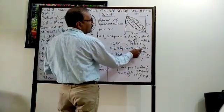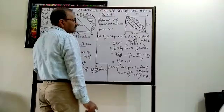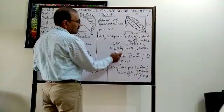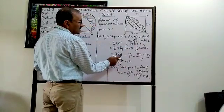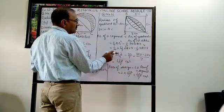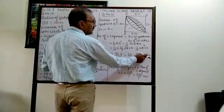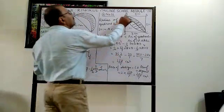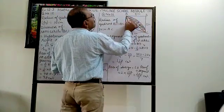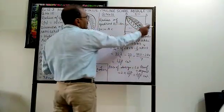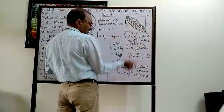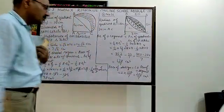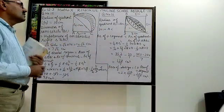Substituting: ¼ × (22/7) × 8 × 8 − ½ × 8 × 8 = 352/7 − 32. Multiplying out: 352/7 − 224/7 = 128/7 square centimetres for one segment. Since both segments are equal (same radius), the area of the design region = 2 × 128/7 = 256/7 square centimetres.